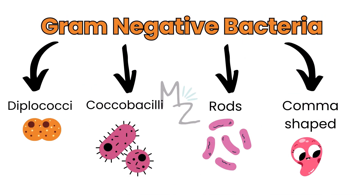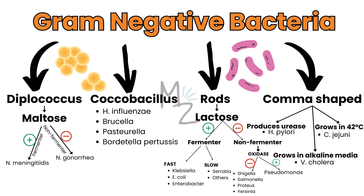Gram-negative bacteria are also classified based on different shapes: diplococci, coccobacilli, rods, and comma-shaped. Diplococci are further classified based on maltose fermentation — if a bacterium ferments maltose, it's Neisseria meningitidis; if it doesn't, it's Neisseria gonorrhoeae.